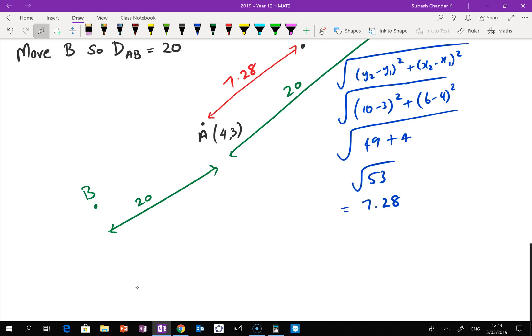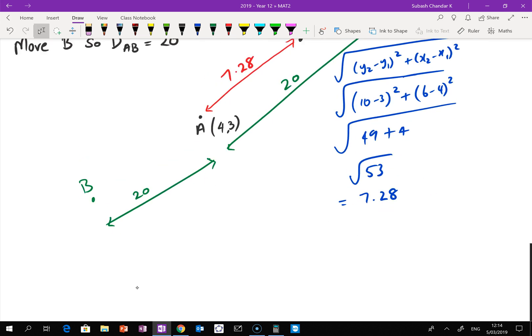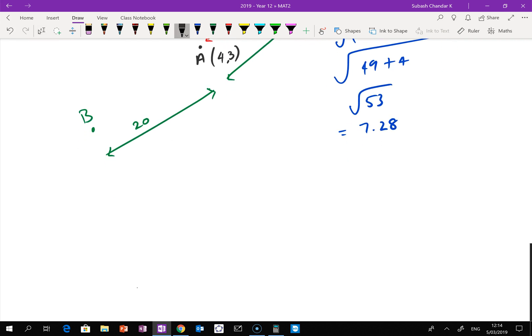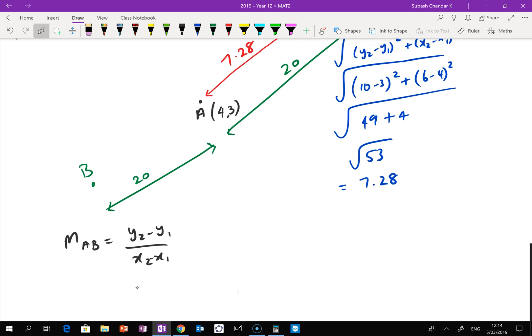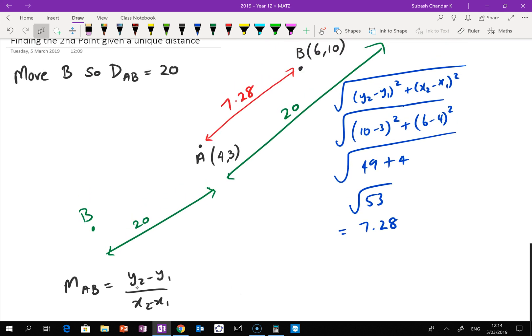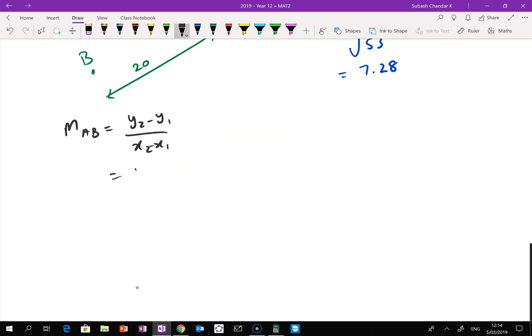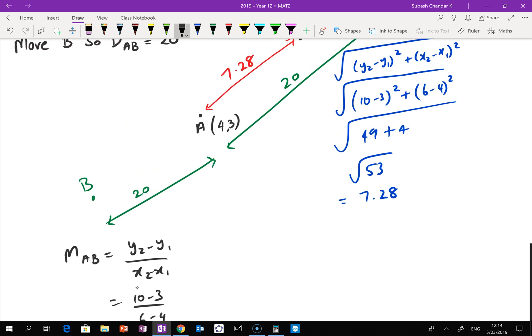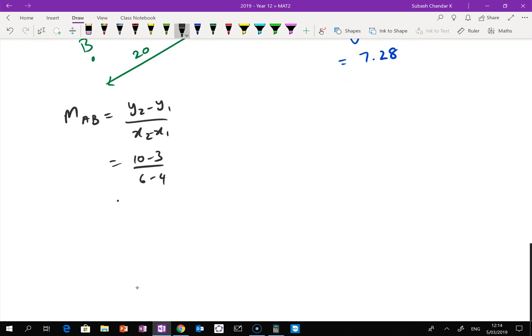So to solve this what I need is I need to find the equation of AB first. So first I'm going to work out the gradient of AB. So it's y2 minus y1 divided by x2 minus x1. So I've got 10 minus 3 divided by 6 minus 4, which gives me a gradient of 3.5.